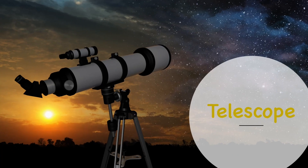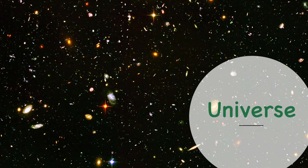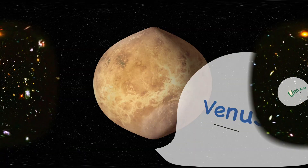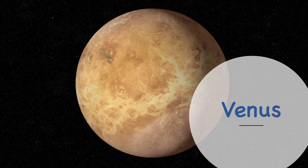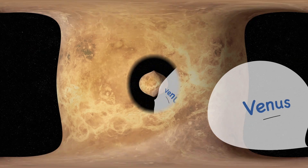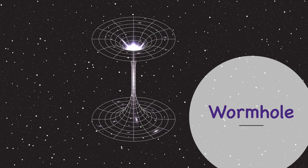T is for telescope. U is for universe. V is for Venus. W is for wormhole.